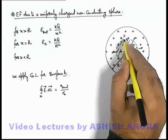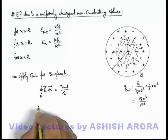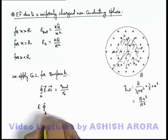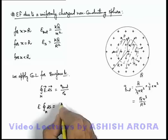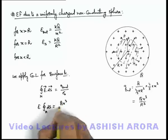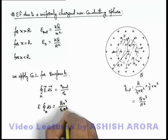Parallel to the area vector at every point, so this can be written as E integration for the surface M, dS is equal to Q x cube by epsilon not R cube.